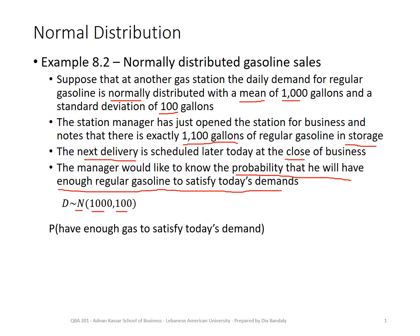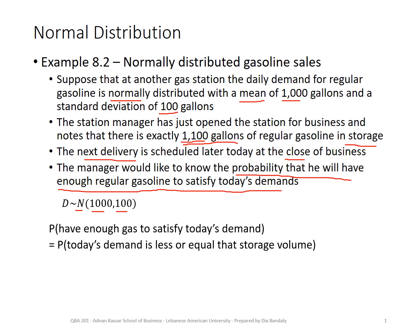So how do we represent that mathematically? We want to find the probability of having enough gas to satisfy today's demand. You will have enough gas when demand is less than what you have in storage, which is 1100. So we can write this as the probability that today's demand D is less than or equal to 1100 — that is, P(D ≤ 1100). This is very important to recognize.